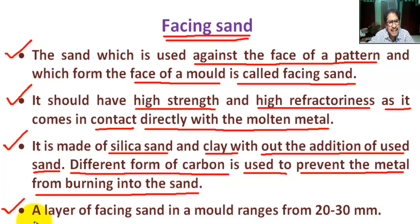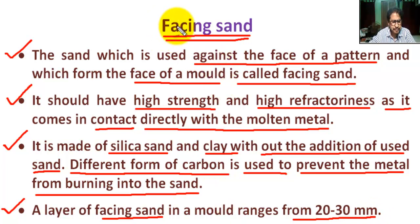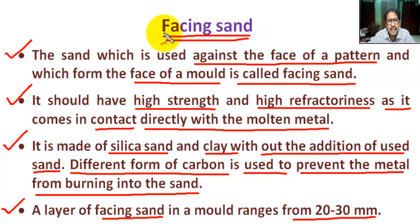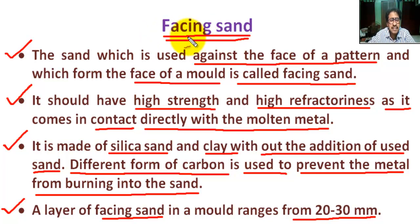Different forms of carbon are used to prevent the metal from burning into the sand. A layer of facing sand in a mold ranges from 20 to 30 millimeters. Facing sand comes in direct contact with the molten metal, therefore it must possess high strength and refractoriness. Different facing materials such as graphite and molasses made from sugarcane are used.